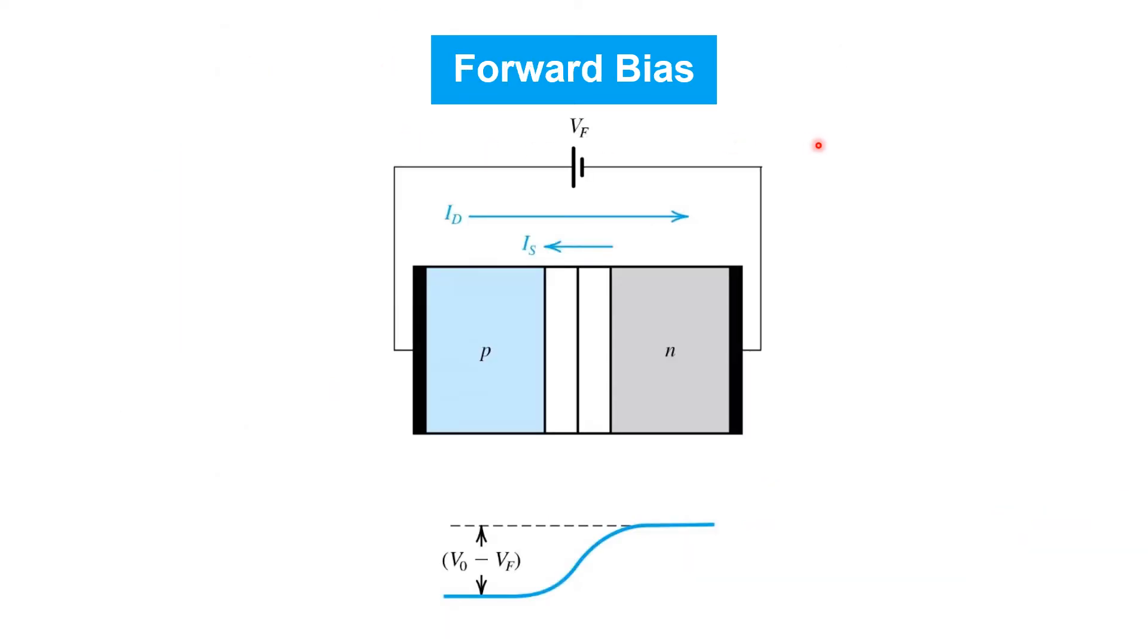Next, let's consider what happens with forward bias applied across the PN junction. That is, with the voltage VF applied with the polarity shown, higher potential on the P side, lower potential on the N side. Doing so subtracts off from the built-in potential of the PN junction. As a result, the barrier to diffusion currents of excess holes from the P side to the N side, and free electrons from the N side to the P side, those diffusion currents both increase exponentially with the applied forward bias voltage VF.